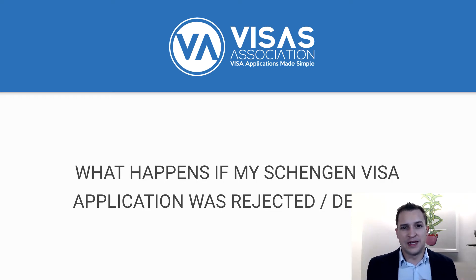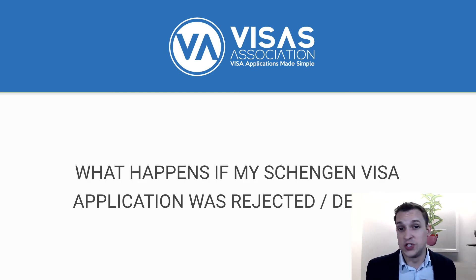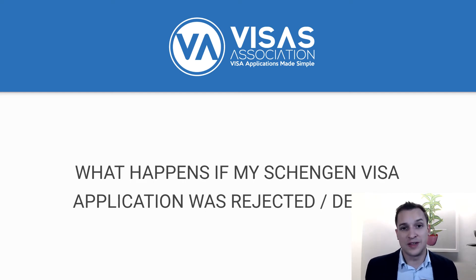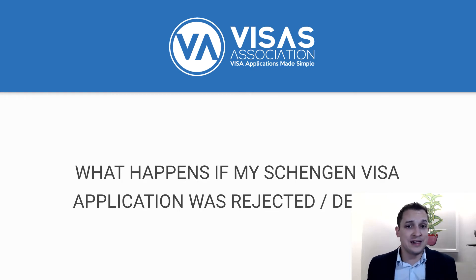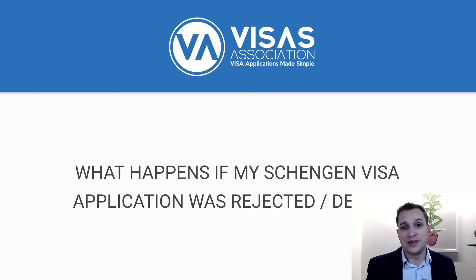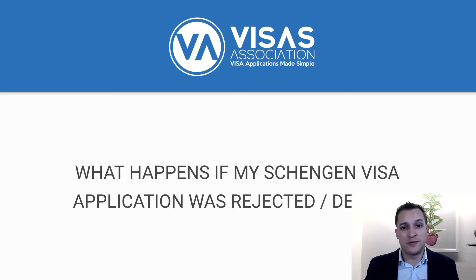A really good rule of thumb: if you think you should refresh or redo a document, do it. Go and get new documents, new utility bills, new things — because the application process might have taken two, four, or six weeks, and some of your documents might be out of date. So when you get into step three, be sure to include everything you've done as well. If a month has passed and you've got new bank statements, new payslips, new everything — include them as well.